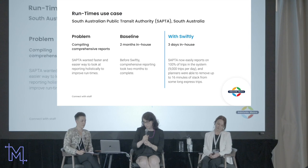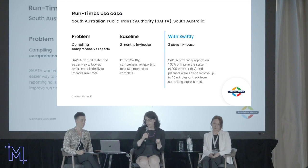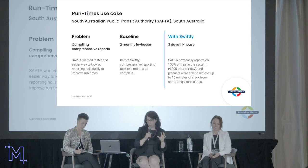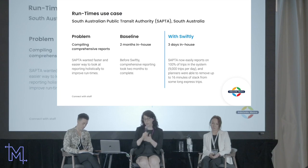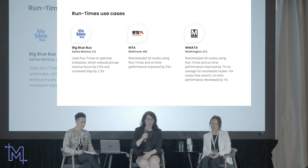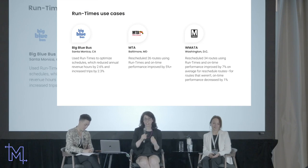SAPTA also used our run times data and removed 60 minutes of slack from their system. The real value for them was more in data accessibility — as a private transit operator running multiple systems, they were able to use our data through APIs, making data much easier to co-mingle and perform calculations. It saved them a tremendous amount of time creating optimal schedules. Many agencies using run times are able to save significant time from their schedule and significant staff time in how long it takes to make those schedules.